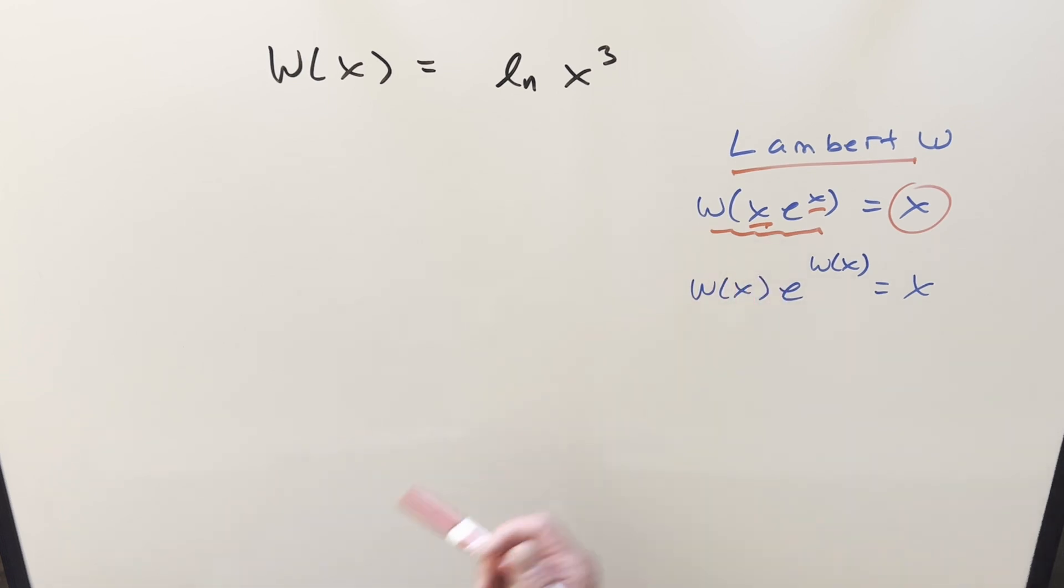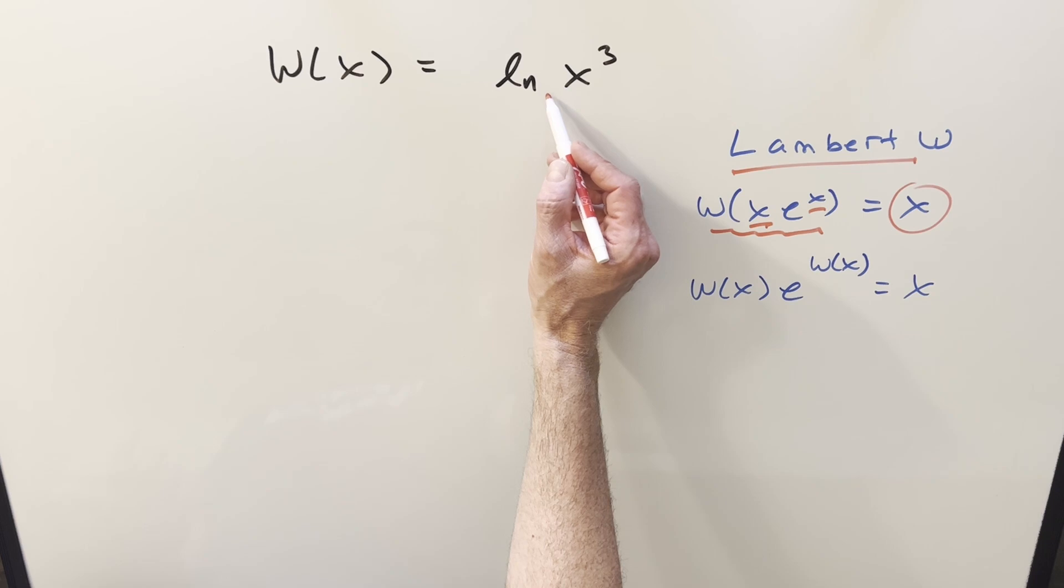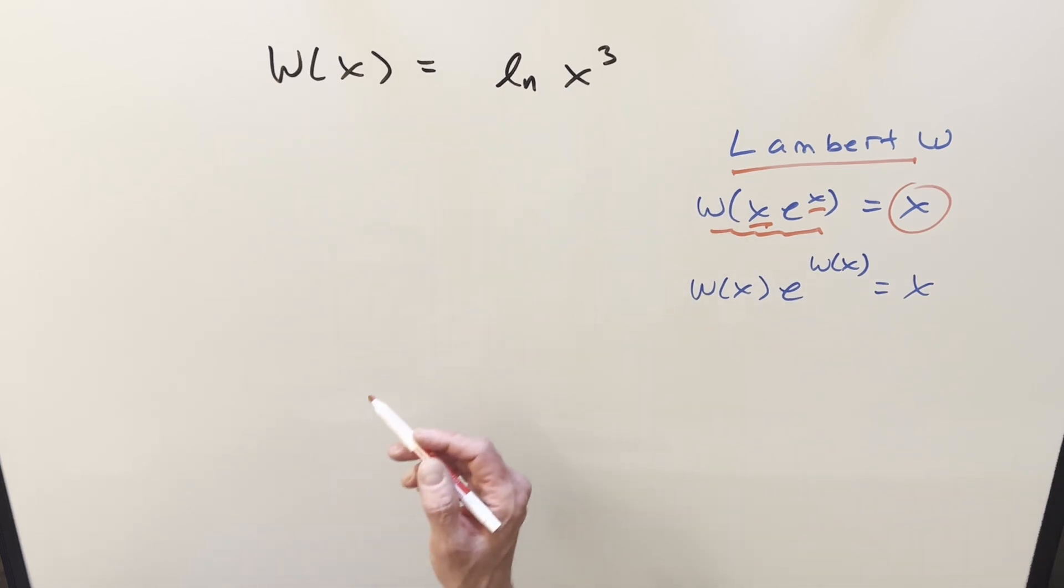Now, if you need some more information on the Lambert W function, I have a couple of playlists on this. We have some information on the website, so I'll provide links for all this. So to get started with it, I think we'll use this first formula. There is a couple ways to do it. We rearrange this, but let's do it a different way. If we have something in this form, we get back the x.